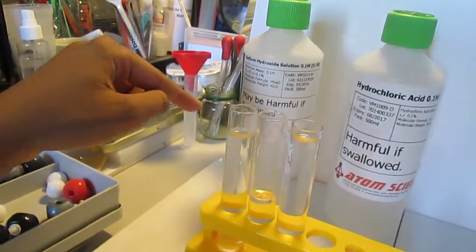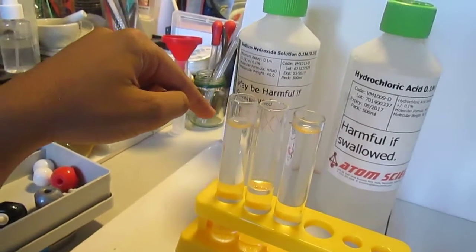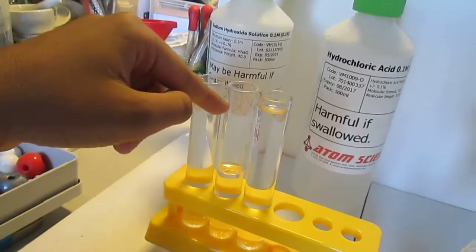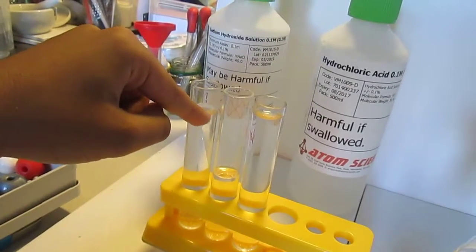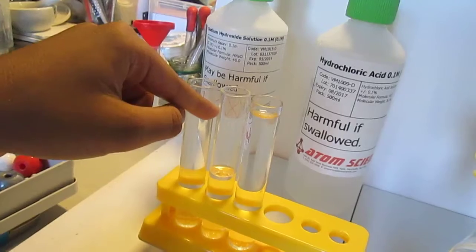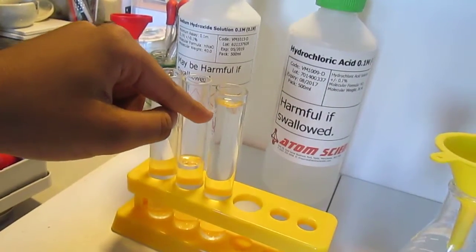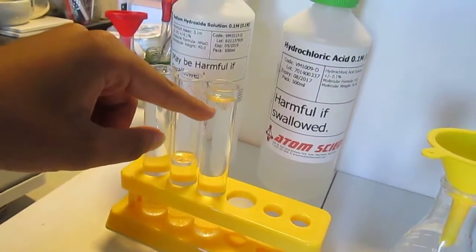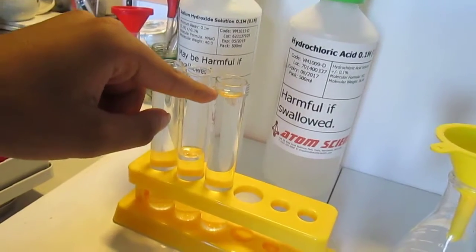The first test tube on the left contains phenothaline. The second test tube on the left contains sodium hydroxide which is a strong alkaline. The third test tube contains hydrochloric acid which is a strong acid.